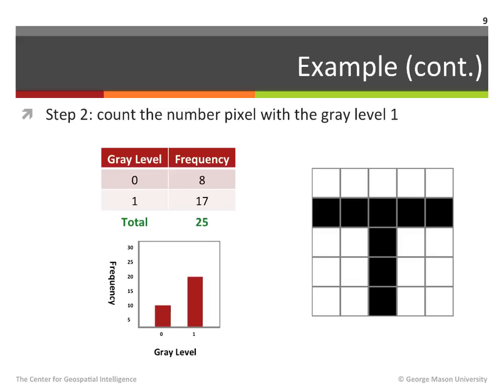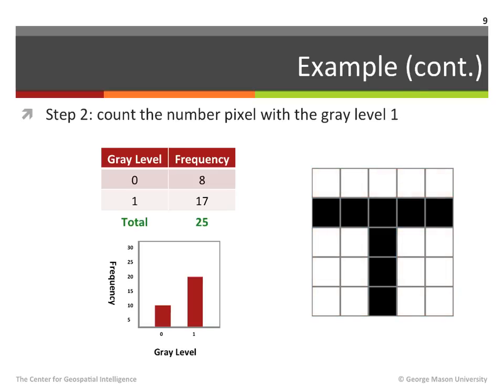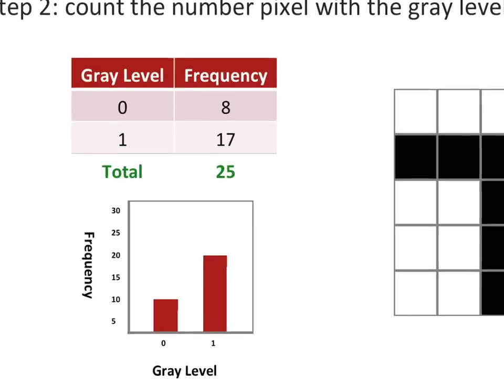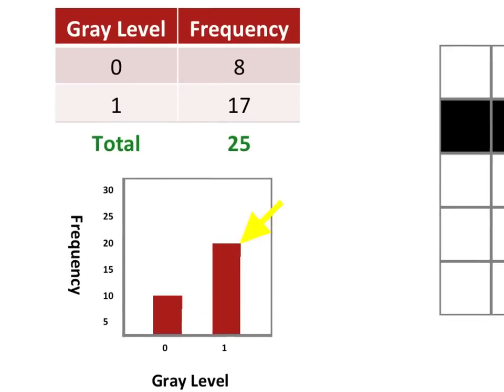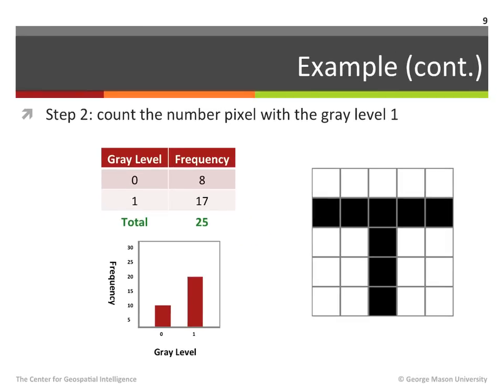We also update our chart by plotting a bar at gray level zero with a height of eight. In the second step, we count the number of pixels with gray level one, represented by the white color. As you can see, there are 17 pixels with this gray level. We record this result by populating the frequency column cell corresponding to gray level one with the number 17. We also update our chart by plotting a bar at gray level one with a height of 17. Since there are no more gray levels in the image, the process ends here.